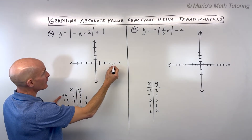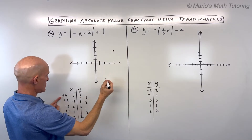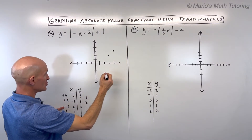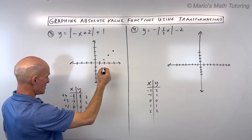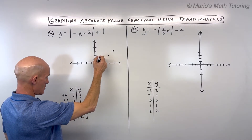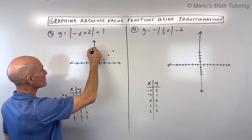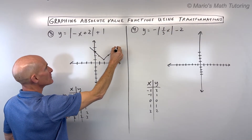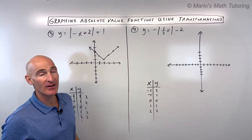Plotting those points: (4, 3), (3, 2), (2, 1), (1, 2), and (0, 3). There's our absolute value graph — that V-shaped graph.